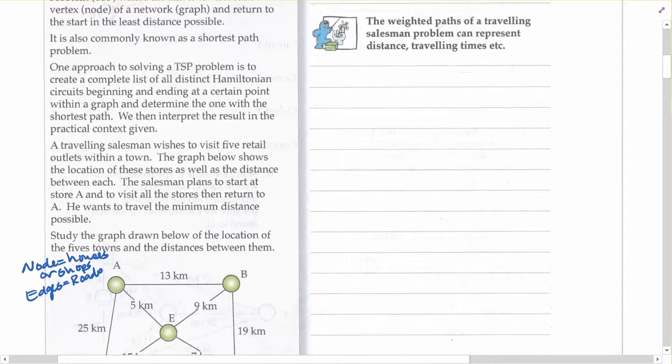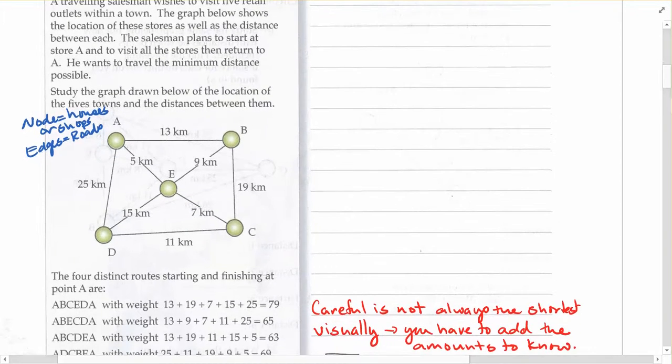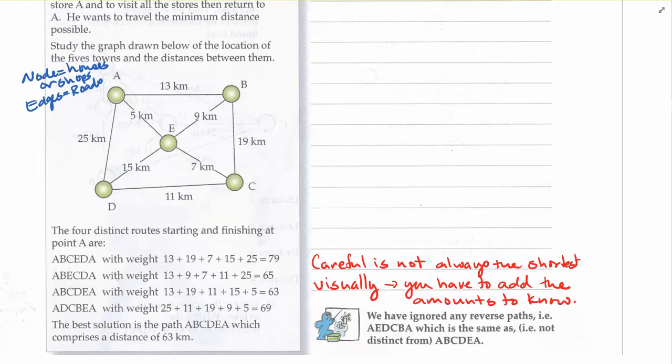With the traveling salesman problem, an important thing for us is to make sure that we know the difference between what a distinct route is. We need to be careful, and we talked about it in the traversability ones as well and the Hamiltonian ones, that distinct routes make sure that they're not just the same thing forwards or backwards. It's helpful to use a pencil or different colored pens just so you can erase as you go or try out different things.